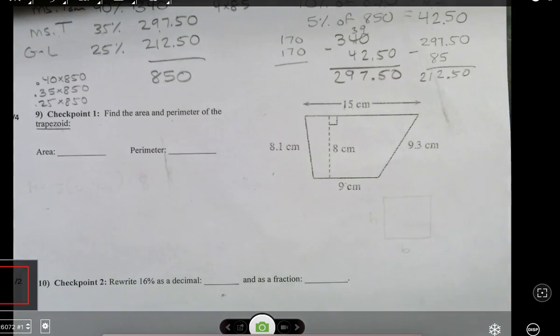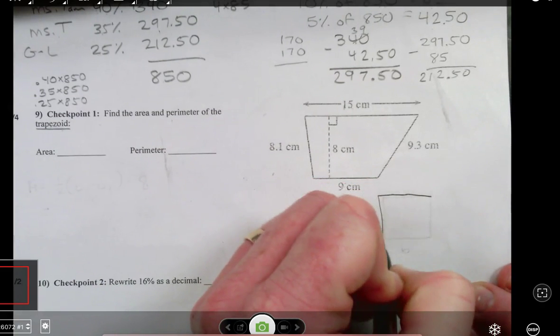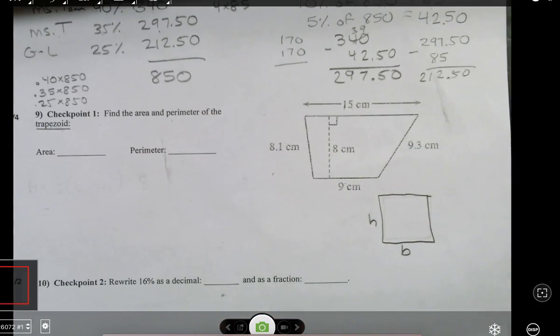We have a trapezoid here. Well, it seems like we are pretty good with finding the area of a rectangle, where we take the base and multiply it by the height. The base times the height. When we have a triangle, we take half the base and the height.